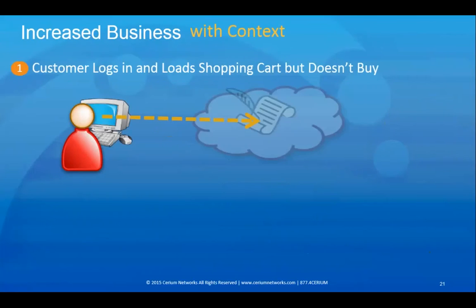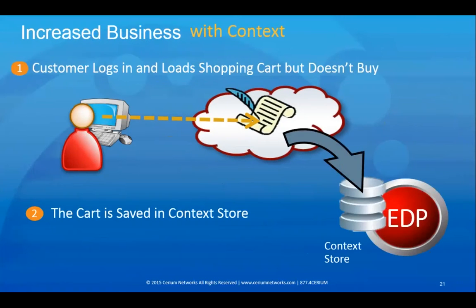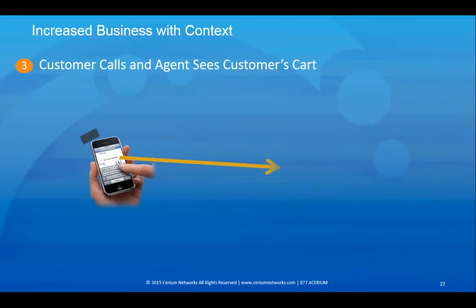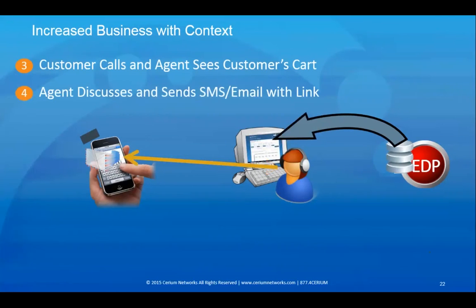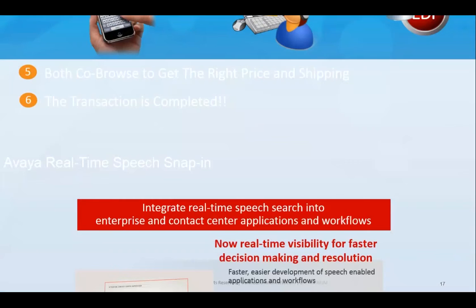In the second example, a customer logs in and loads a shopping cart but doesn't buy. The cart information is saved in the contact store. When the customer calls, the agent sees the customer's cart, discusses it, and sends an SMS email with a link. Both co-browse to get the right price and shipping, and the transaction is completed.